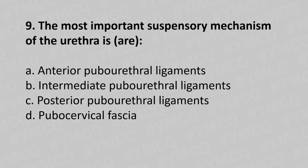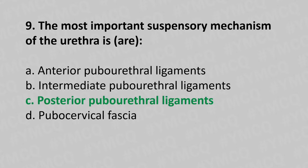Question 9: The most important suspensory mechanism of the urethra is — option A: anterior pubourethral ligaments, option B: intermediate pubourethral ligaments, option C: posterior pubourethral ligaments, option D: pubocervical fascia. The answer is option C: posterior pubourethral ligaments.